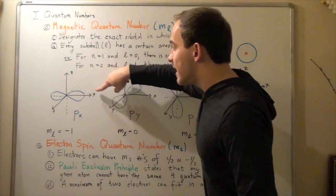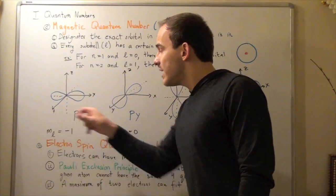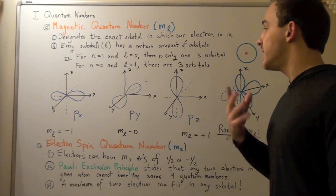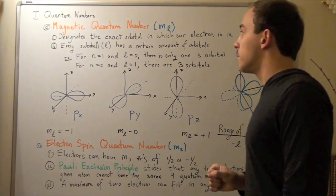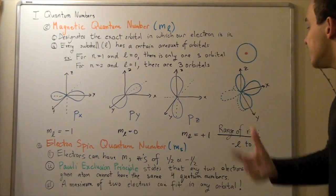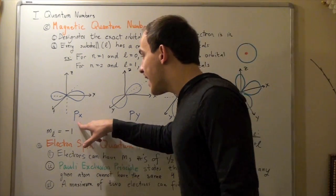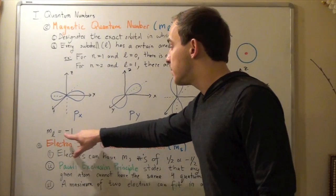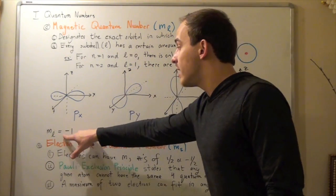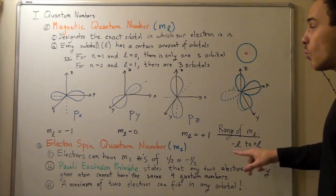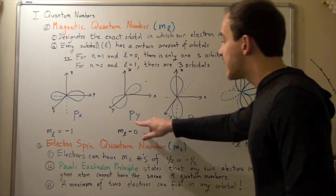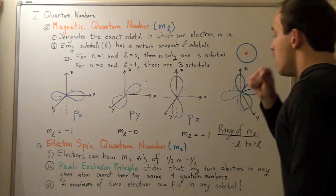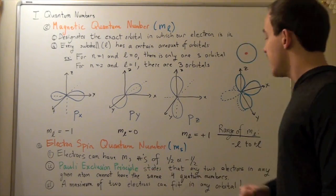The range for the magnetic quantum numbers is derived from L: it begins at minus L and goes to plus L in increments of 1. Since L equals 1 for the P subshell, the ml for px is minus 1, the ml for py is 0, and the ml for pz is plus 1.